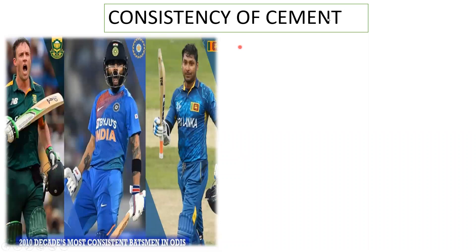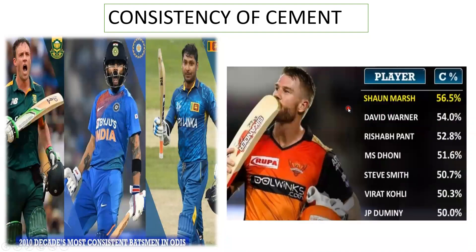In general terms, when we see players like AB de Villiers, Virat Kohli, and Sangha, one thing that comes to mind is consistency. They are the most consistent batsmen. What do we mean by consistency? Every time you put this player into a match, they'll perform — at least 40 or 50 runs every time they come to bat. So we say Virat Kohli is a consistent batsman. With this logic, we'll try to see what is consistency of a cement.